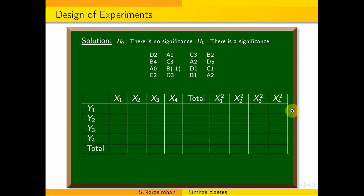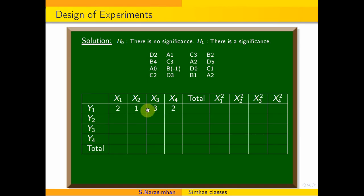We will put up a table with columns x1, x2, x3, x4 and rows y1, y2, y3, y4. The first row values are 2, 1, 3, 2, giving a total of 8. The squares are: 2 squared is 4, 1 squared is 1, 3 squared is 9, 2 squared is 4.